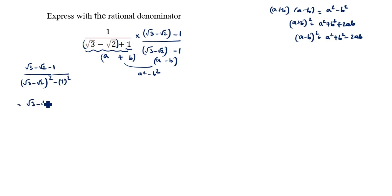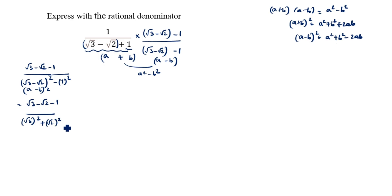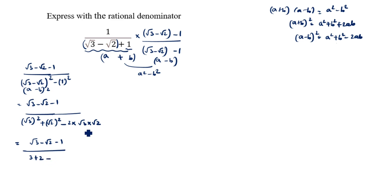Here 'a' is root 3 minus root 2, so the denominator becomes root 3 minus root 2 the whole square minus 1 squared. Expanding (a - b) whole square: a is root 3, b is root 2, so we get root 3 squared minus root 2 squared minus 2 root 6, which gives 3 plus 2 minus 2 root 6 minus 1.